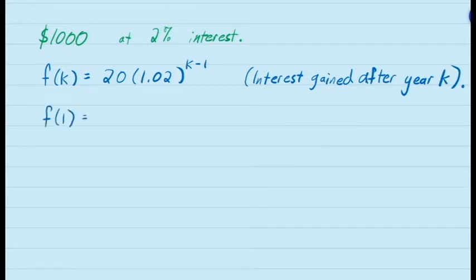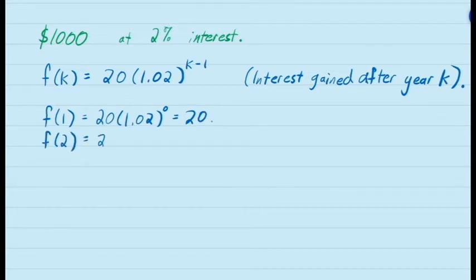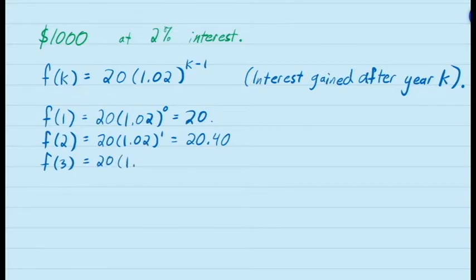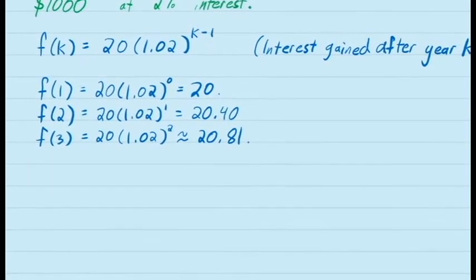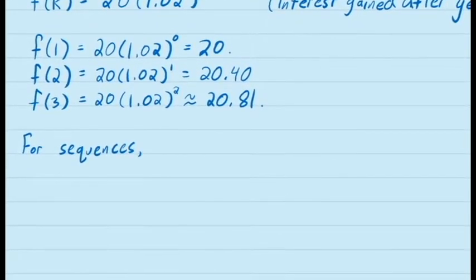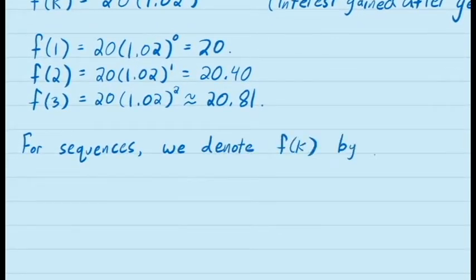This means that in the first year, the amount of interest you would earn is $20. In the second year, the amount of interest you would earn would be an additional 20 times 1.02, which is $20.40. In the third year, you would be earning an additional 20 times 1.02 to the exponent 2, which is about $20.81, and so on. A function like this that takes natural numbers as input is often called a sequence, and we have an alternate notation for sequences, where instead of writing f of k, we simply put the input as a subscript, writing f subscript k. We would then say f subscript k, where k takes values in the natural numbers, is a sequence.